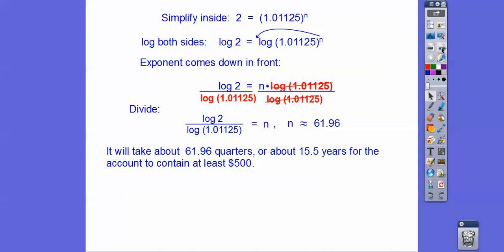Let's answer the question. It's going to take about 70 quarters, or about 15 and a half years, for the account to contain at least $500.